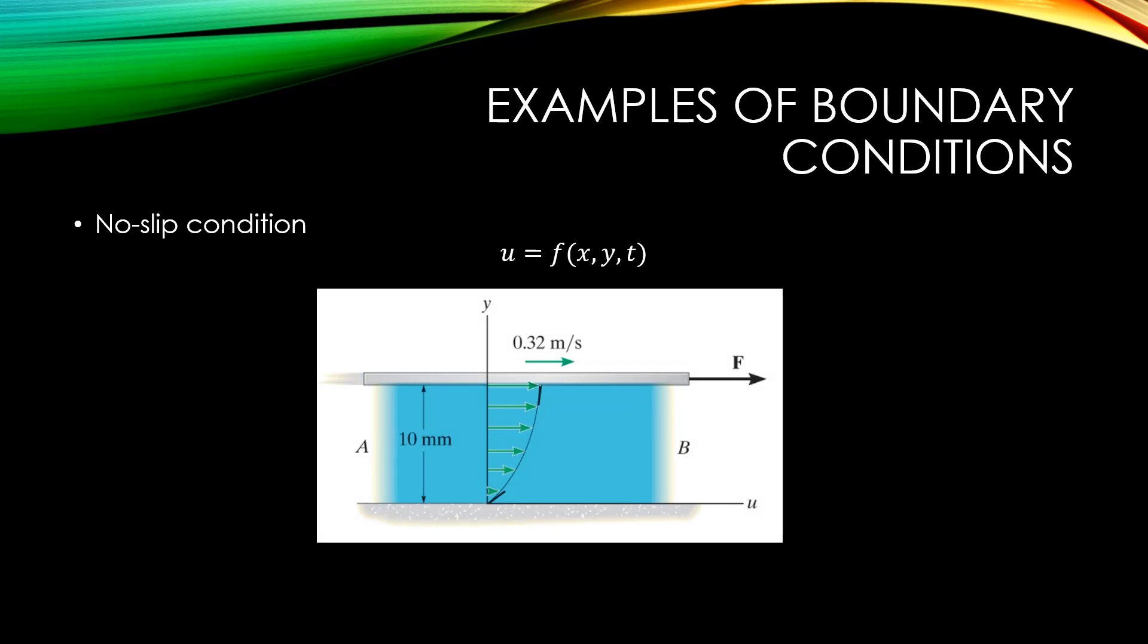In the figure, the x component of the velocity, also known as u, is a function of x, y, and time. However, the no-slip condition tells us that the velocity of the fluid particle in contact with the solid will be equal to the velocity of the solid boundary. In this case, the velocity of the fluid at any point where y equals zero should be equal to the velocity of the lower boundary, which is zero.